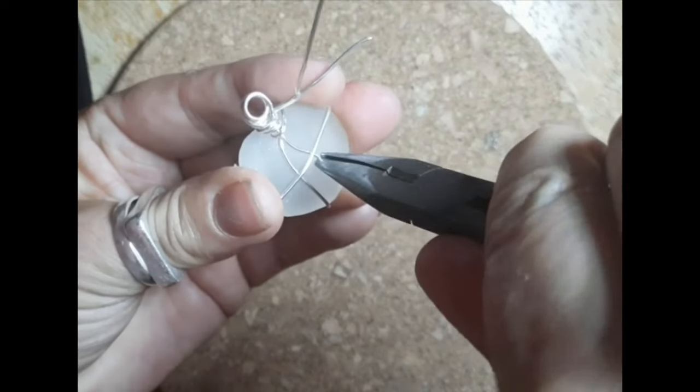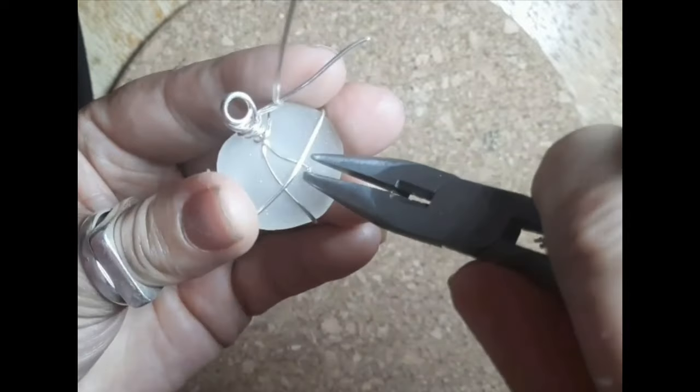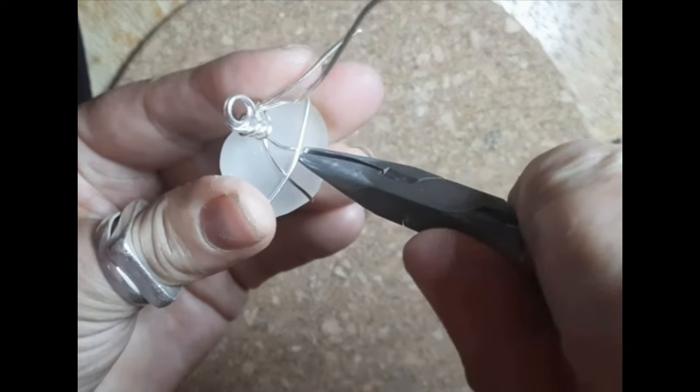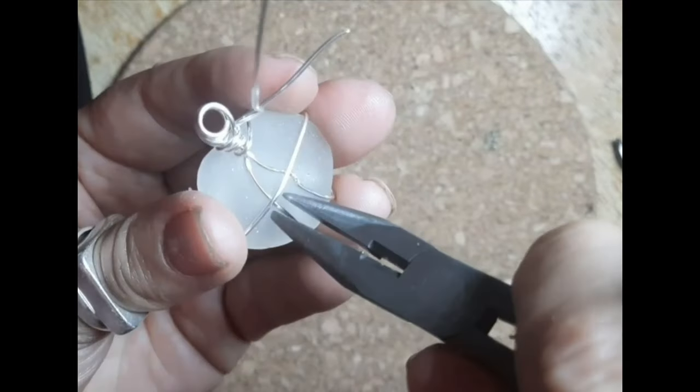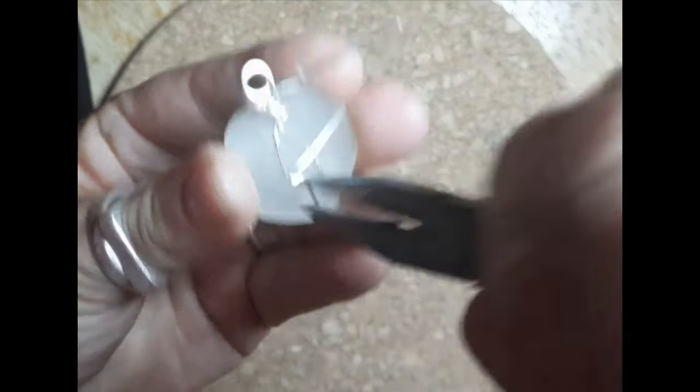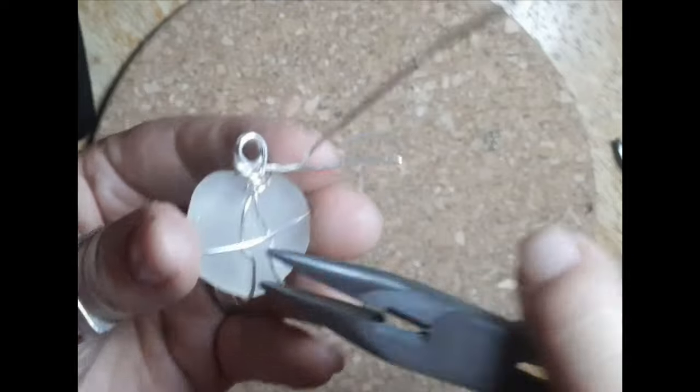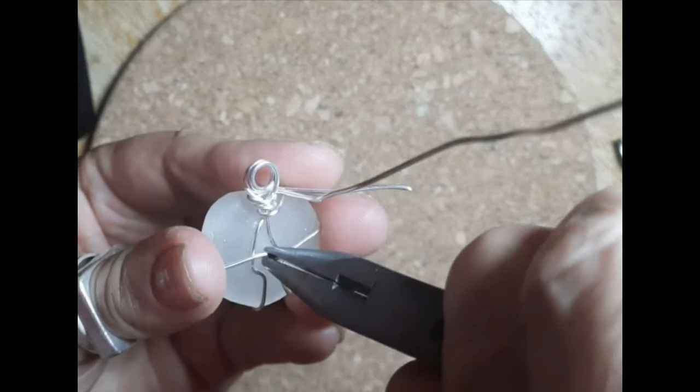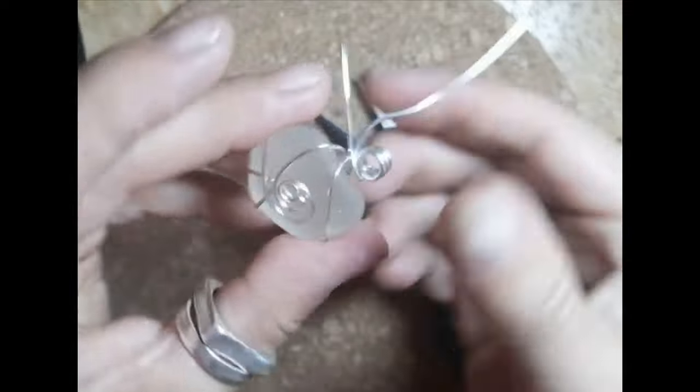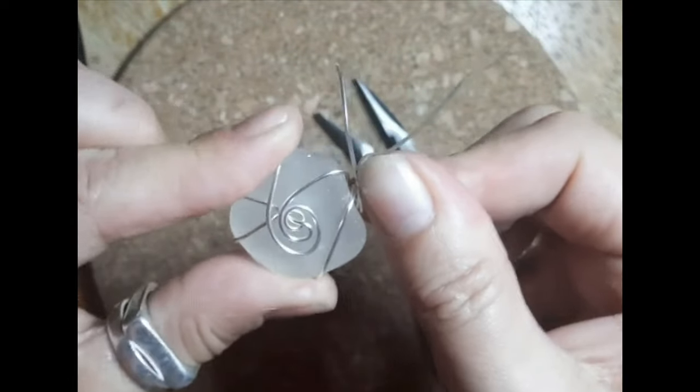You can take your flat nose pliers and make these tighter just by crimping it in place. That will pull the wire tighter. Then you can do the center and test, and that is now firmly in place.